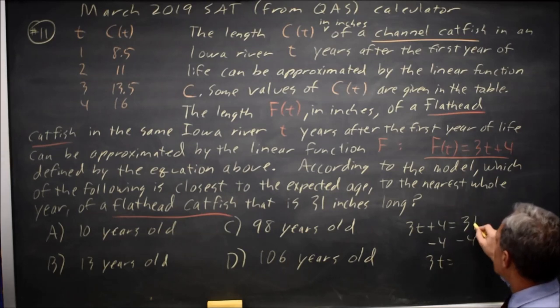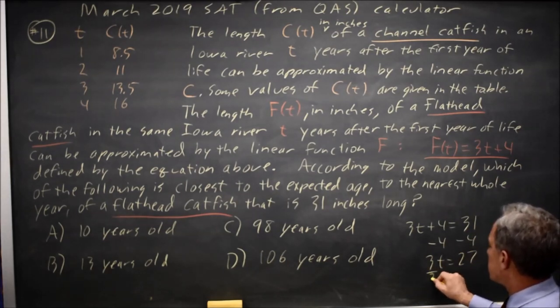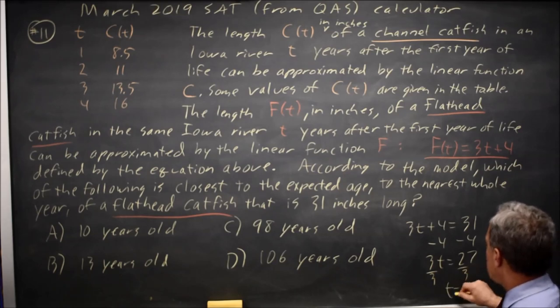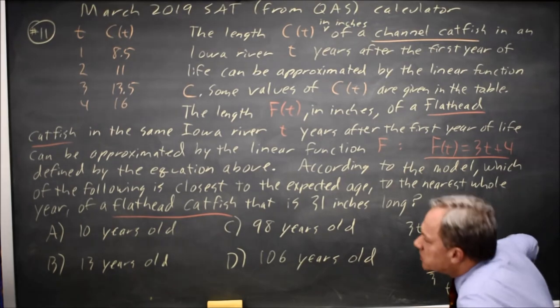3t equals 31 minus 4 is 27, divide both sides by 3, t equals 9, which is not a choice but it's closest to 10 years.